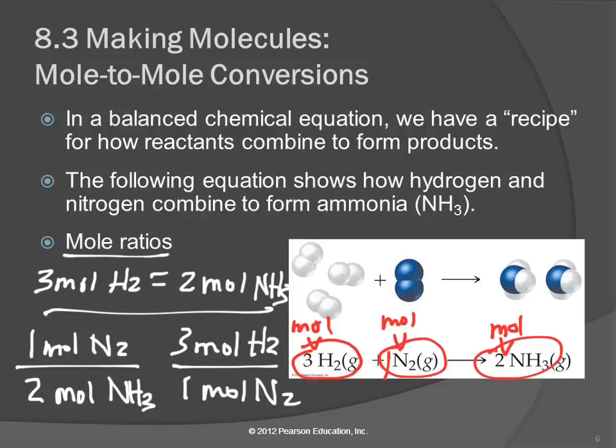If I had a certain amount of nitrogen, let's say I had five moles of nitrogen, and I want to know how many moles of hydrogen do I need to mix with that, then I could multiply by three moles of hydrogen per one mole of nitrogen and find, oh, I need 15 moles of hydrogen.